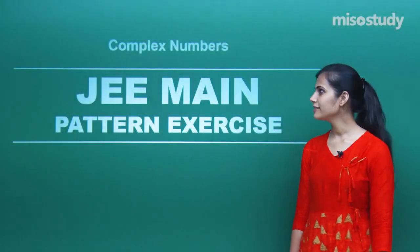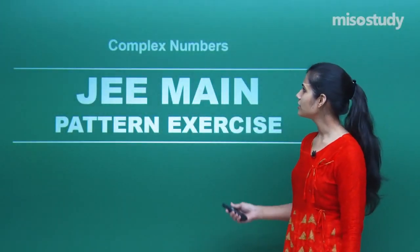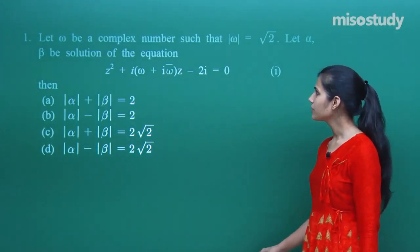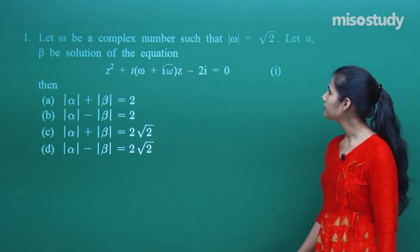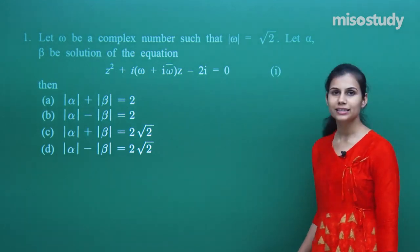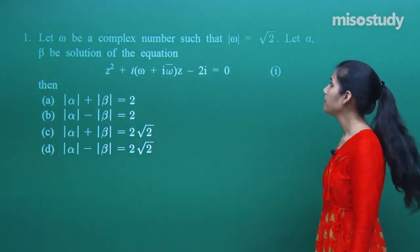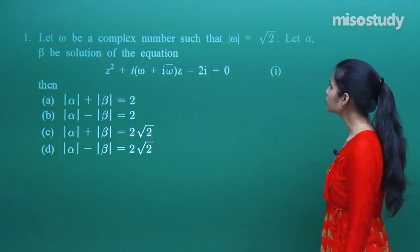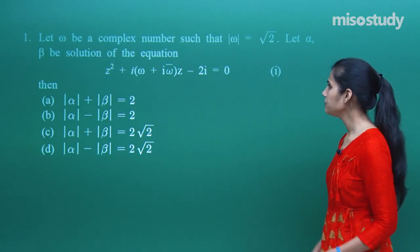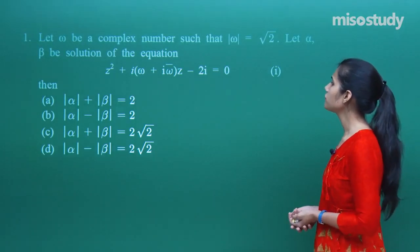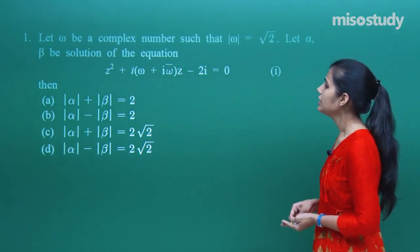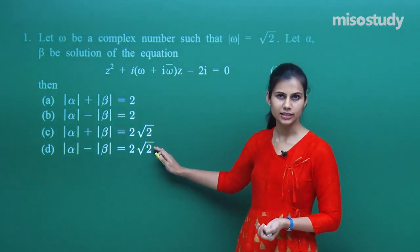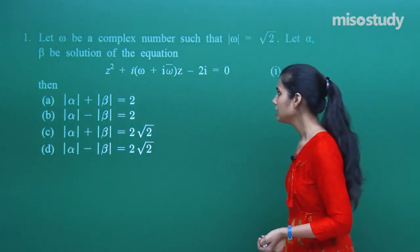Hello guys, let's begin the discussion over the questions. First question says omega is a complex number such that the modulus of omega is given to be root 2. Alpha and beta are the solutions of this equation, then which among the following is the correct answer?